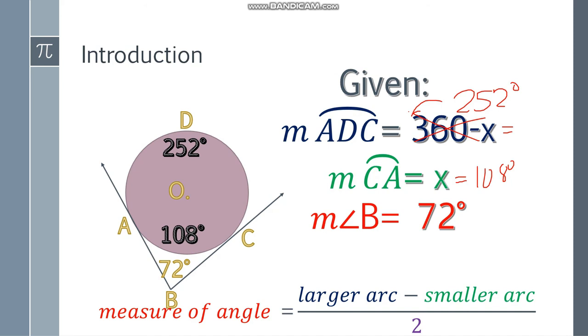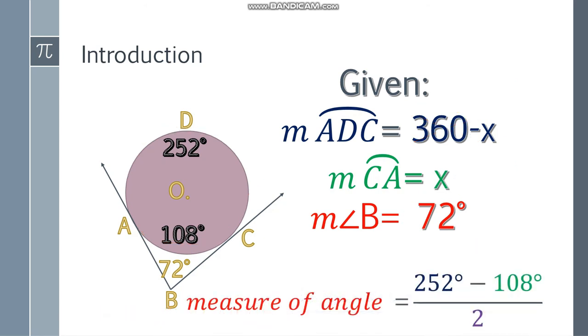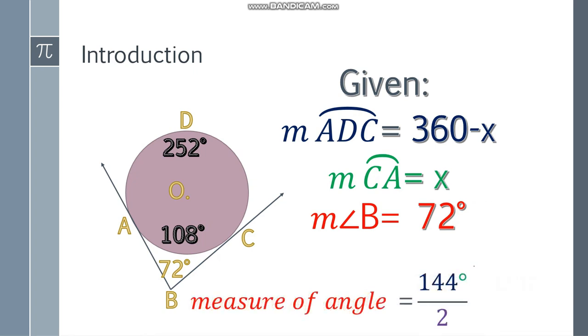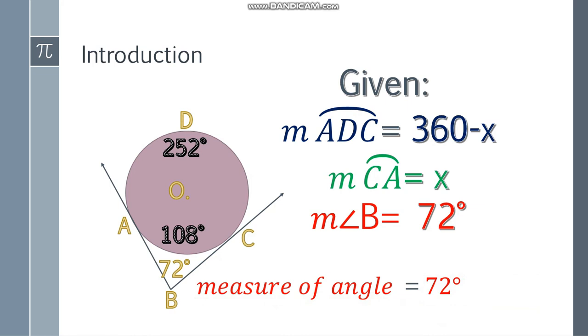So to verify if we're correct, let's check first. Let's go back to the formula. The measure of the angle, the exterior angle is larger arc minus smaller arc, divide by 2. The answer should be 72. Let's check. 252 minus 108, divide by 2. Okay, 144. Divide it by 2, and the answer will be 72. So we're correct.